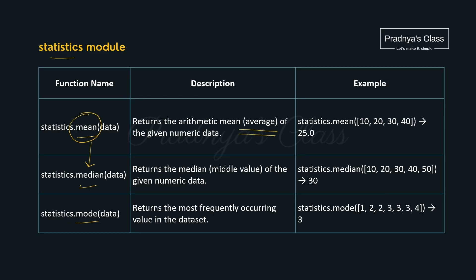Here is the next function that is median. Median means it's exactly middle value of the given data. Look at this example. 30 is at the middle. That's why we got 30. When we are using these functions we need not worry about the formula. How to calculate it? It will directly give the answer.